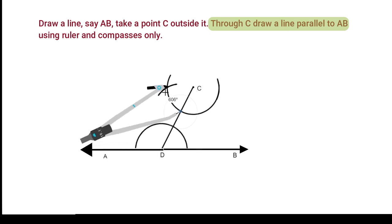Now, join the intersecting point and C to draw a line MN.